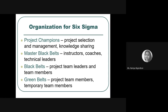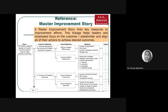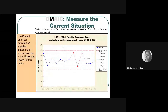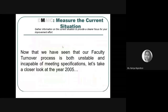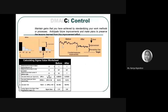We have a simple case study where Six Sigma is applied to solve a problem, covering all five DMAIC phases — Define, Measure, Analyze, Improve, and Control. We will be discussing this in the next class. If you have any questions, we can discuss them right now before moving to the case study.